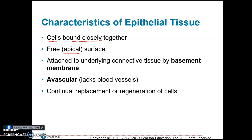The apical surface is also exposed to openings — for example, the cells that line the inside of your stomach. The apical surface would be the surface in contact with the gastric juices and stomach acid. Epithelial tissue is also connected to the underlying connective tissue by a basement membrane, which is opposite to the apical surface.